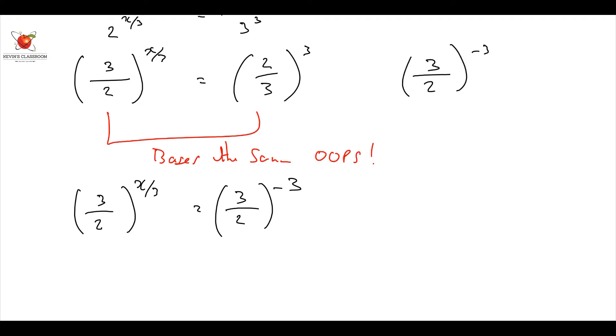Because if I take 3 over 2 to the minus 3 that is equal to 3 to the minus 3 divided by 2 to the minus 3. Now if I make it positive it becomes 2 to the 3 over 3 to the 3 which is exactly what I had.